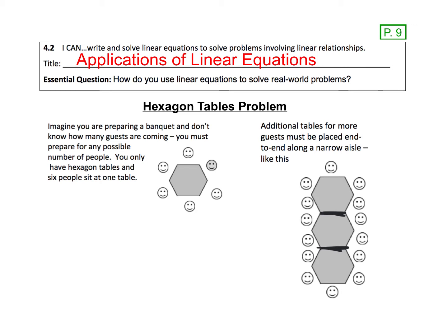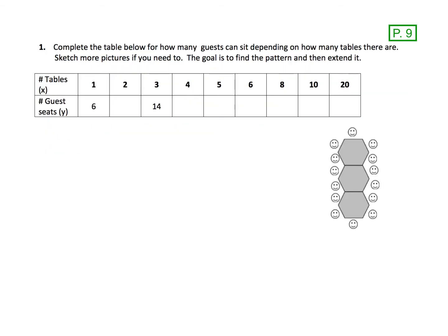We have a table included right here in our packet. Notice that one table, if it's just one table, we have all six seats. But now let's look at two tables. For two tables, let's look at just this section. And remember that if I look at just two tables, I would also have a person right here. So if you go through and you count the number of smiley faces,